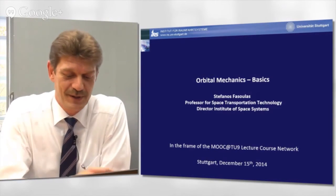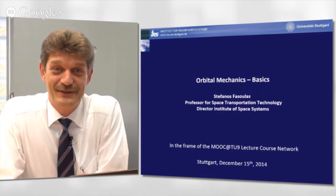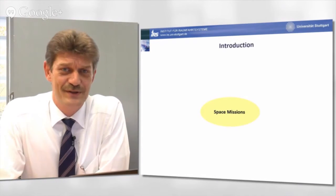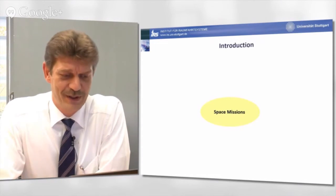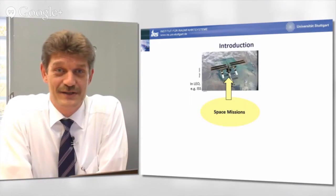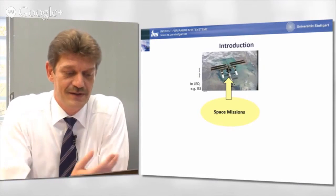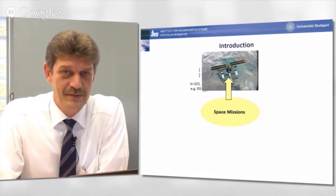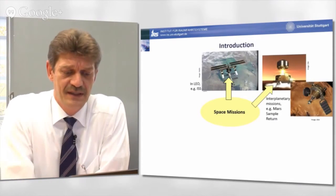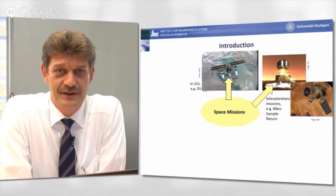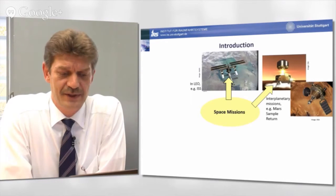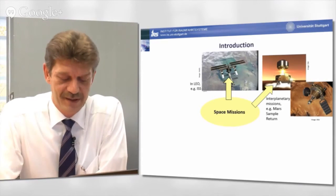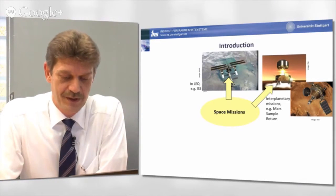This is mandatory for every space mission we consider. You have heard in the previous lecture about small satellites orbiting the Earth. We have more space missions orbiting the Earth, for example, even larger satellites as the International Space Station in the so-called LEO or Low Earth Orbit.